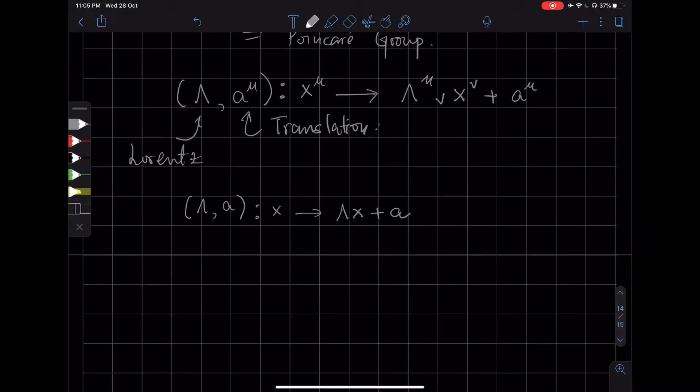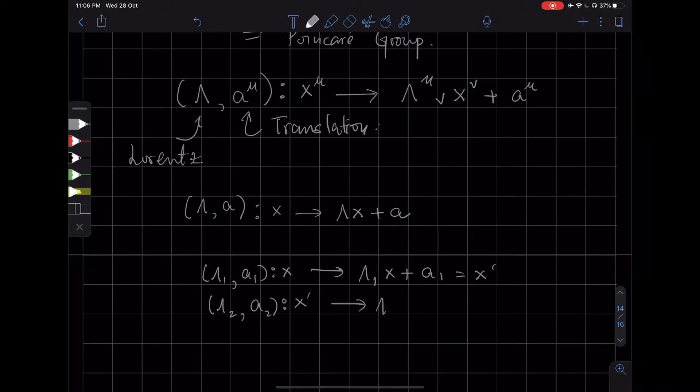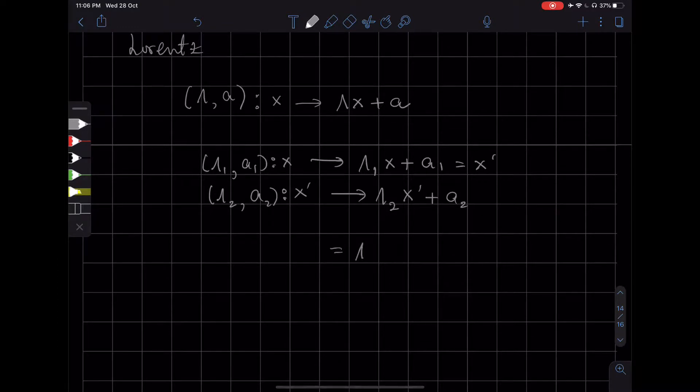So what is a group composition law? Suppose we have two consecutive transformations of this group. The first one is lambda 1 a1 acting on x, and it takes me to lambda 1 of x plus a1. Let's call this x prime, and then we apply another group element lambda 2 a2 on x prime, and then x prime goes to lambda 2 acting on x prime plus a2. But what is x prime? X prime is nothing but lambda 1 x plus a1.